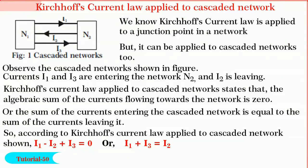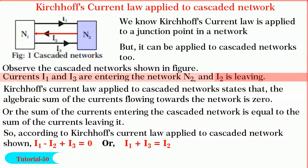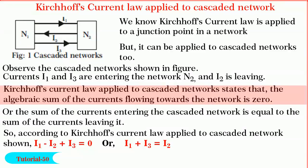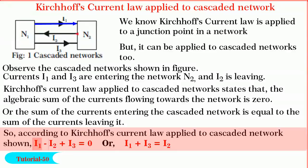Friends, next, we shall learn the concept of Kirchhoff's current law applied to a cascaded network. We know that Kirchhoff's current law is applied to a junction point in a network, but it can also be applied to cascaded networks. Observe the cascaded networks shown in figure. Currents I1 and I3 are entering the network N2 and I2 is leaving it. So, Kirchhoff's current law applied to cascaded network states that the algebraic sum of the currents flowing towards a cascaded network is zero, or sum of the currents entering the cascaded network is equal to sum of the currents flowing away from the network. So, according to Kirchhoff's current law applied to cascaded network: I1 minus I2 plus I3 is equal to zero, or I1 plus I3 is equal to I2.